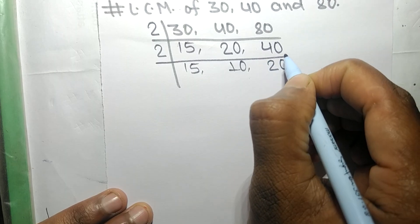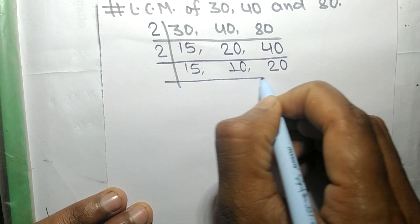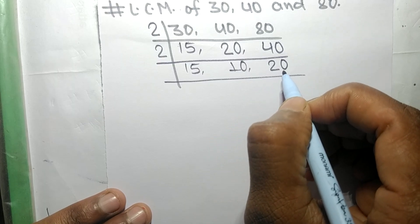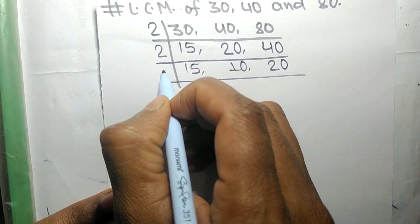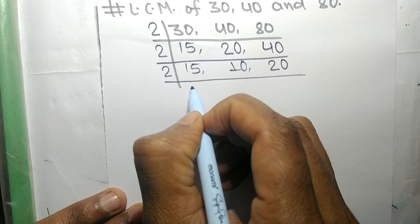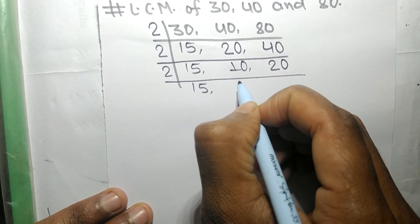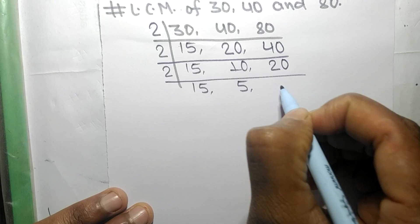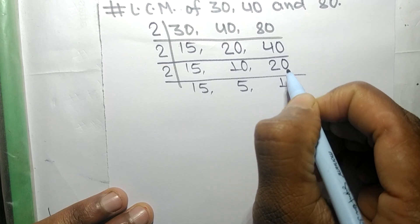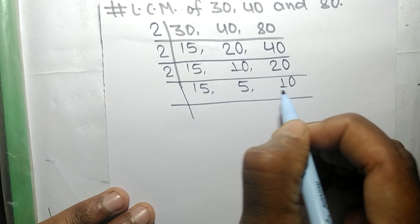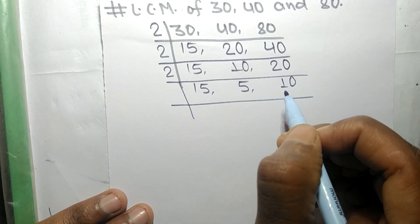Now this 10 and 20 are exactly divisible by 2. 15 is not divisible so it stays the same. 2 times 5 equals 10, 2 times 10 equals 20.